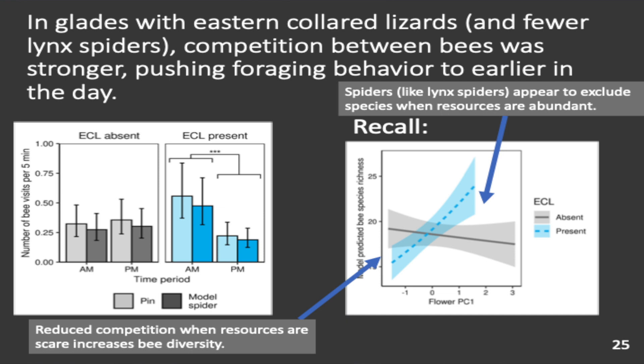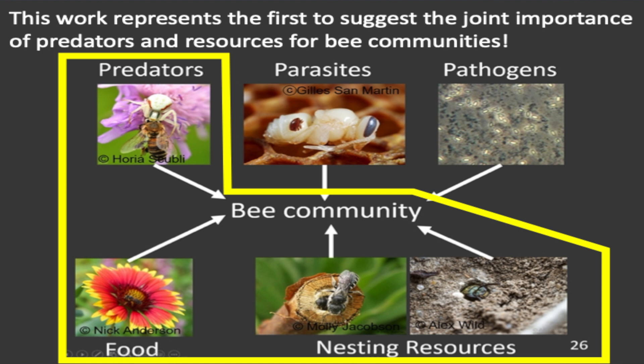This is some of the first work to look at predator effects on bees at the community level, determining that these top-down effects — from the top of the food web going down — impact bee communities with a similar strength as the previously studied bottom-up resource factors. By having lynx spiders when flower quality was low, it reduced the amount of competition, so more species were able to coexist. In areas with really poor resources like urban areas, spiders like the lynx spider might actually be helping bee diversity by limiting competition.